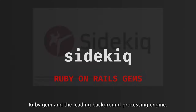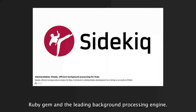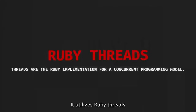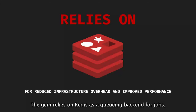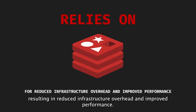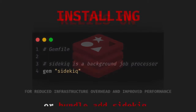Sidekiq is a popular Ruby gem and the leading background processing engine. It utilizes Ruby threads to efficiently scale processing for input-output heavy background tasks. The gem relies on Redis as a queuing backend for jobs, resulting in reduced infrastructure overhead and improved performance.